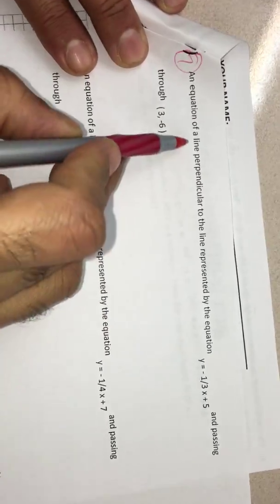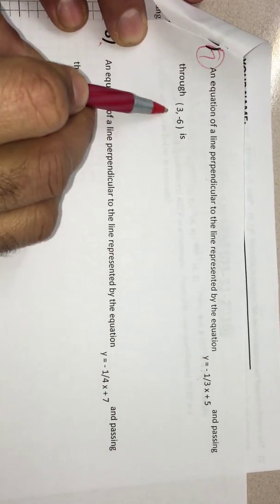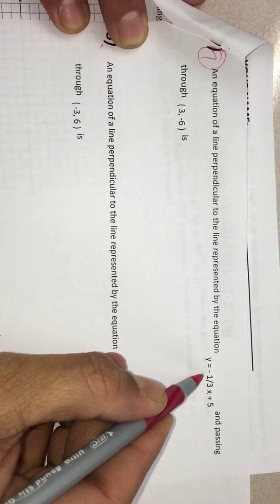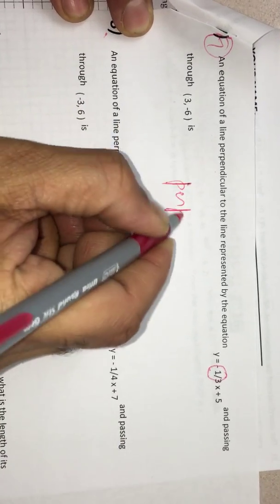Now if you see the 7th problem, 7th and 8th are the same type. I do 7th. He is asking what is the equation of the line perpendicular to this line and passing through this point. For that, if you see this slope, it is negative 1 over 3. What is the perpendicular line slope?